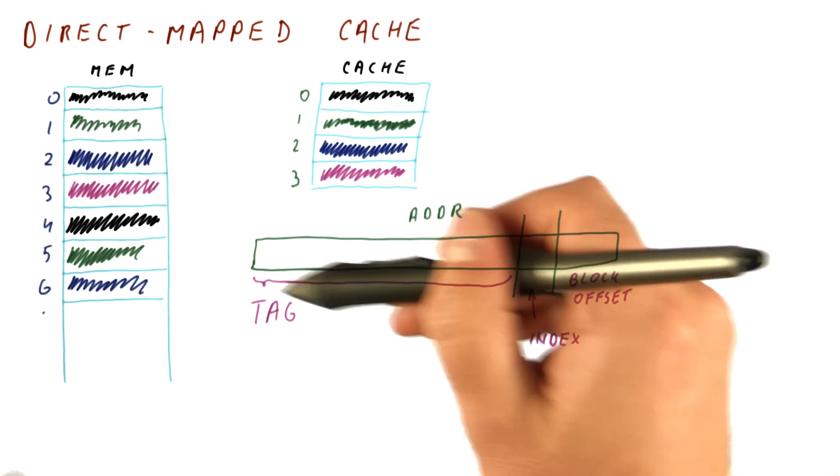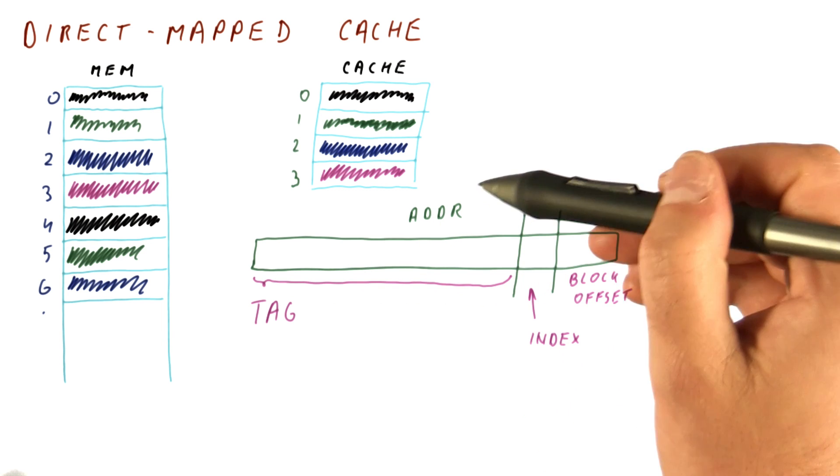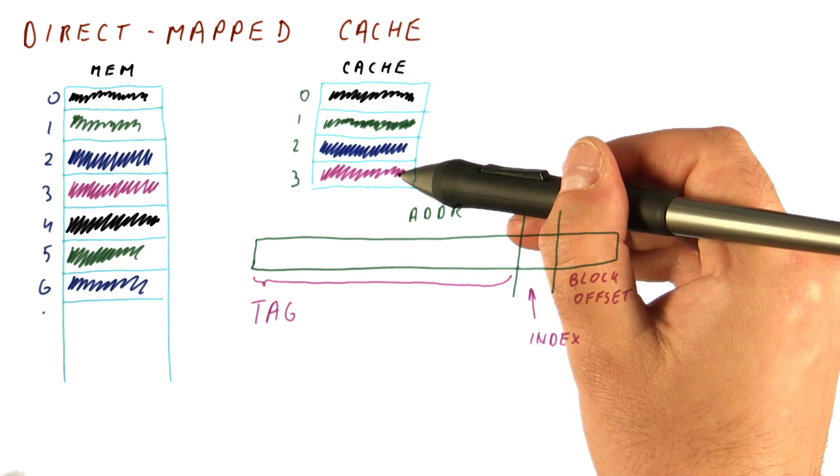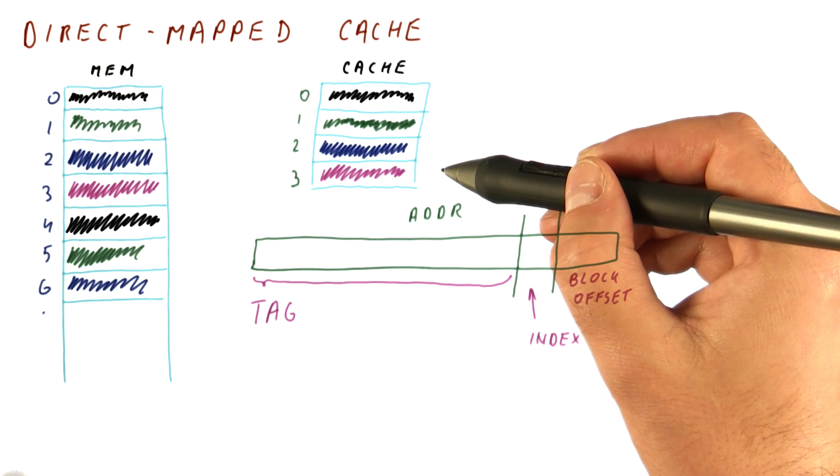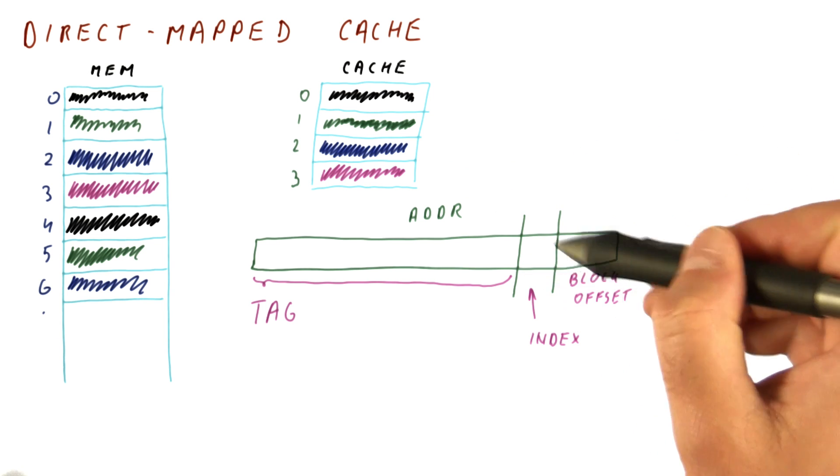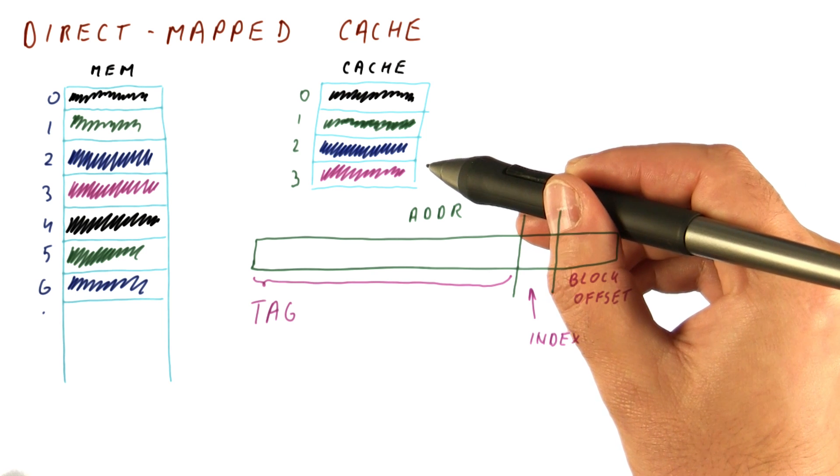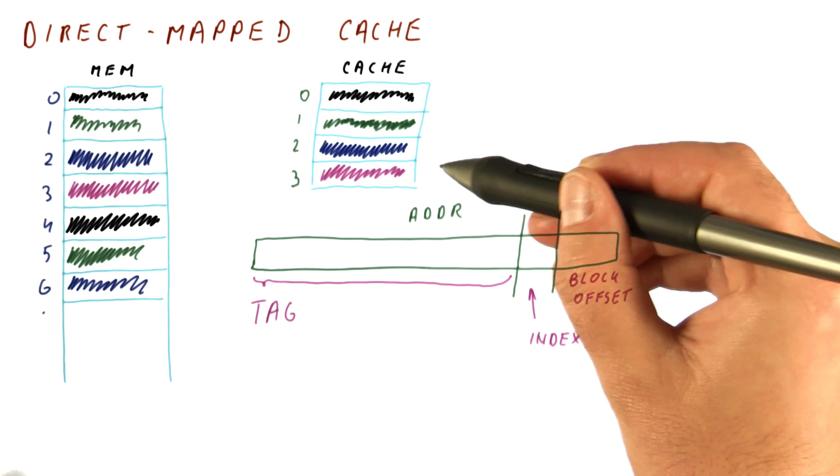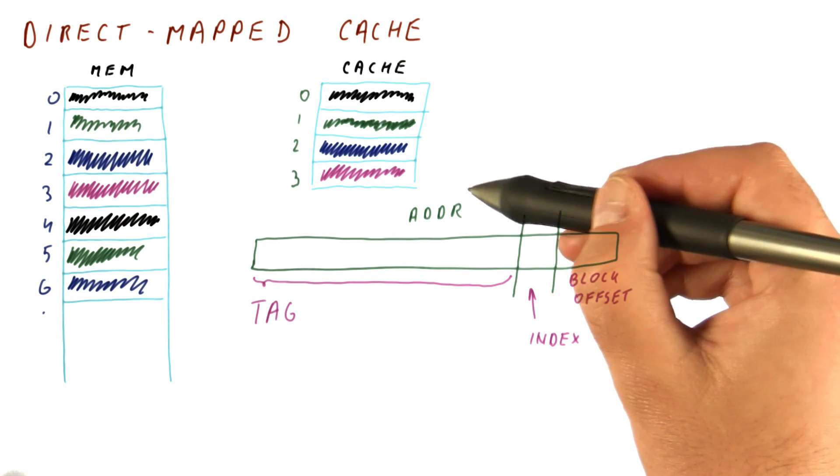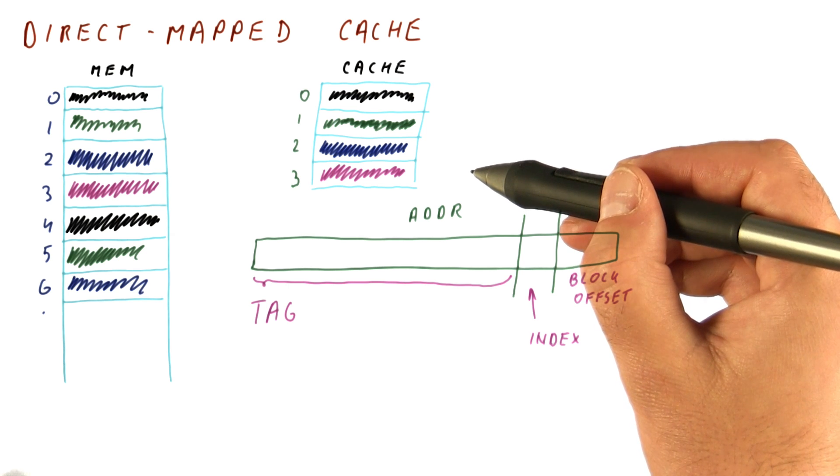And for that, we only need these bits, because the index bits are pretty much predetermined once we are already looking here. In other words, if we stored the index bits in the tag, all of the tags that we could possibly put here would have the same index bits, which means we don't have to store them, because we already know them.